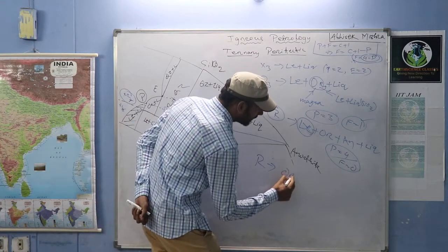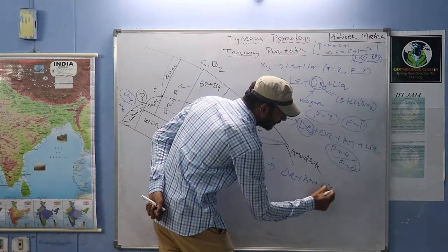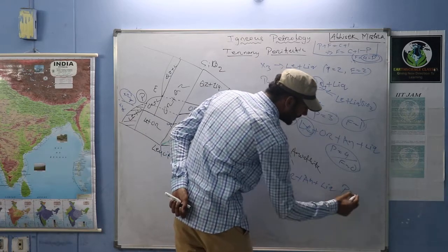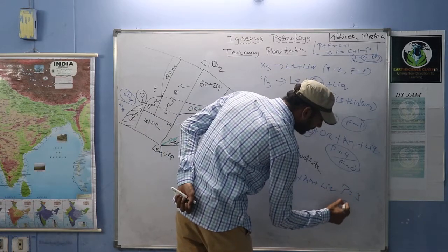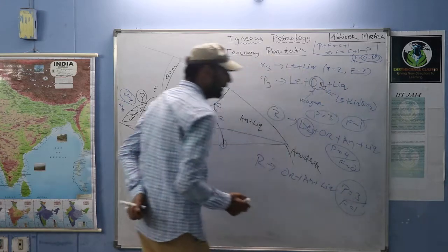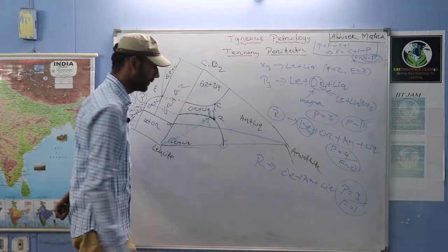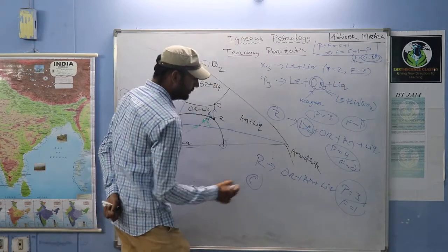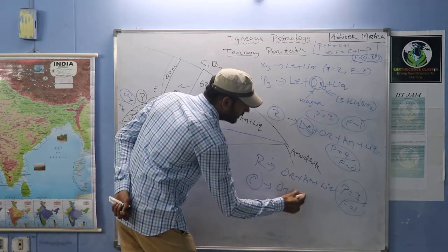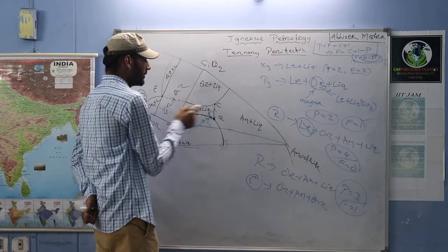At X4, also in the leucite field, we get leucite plus liquid. Number of phases two, degree of freedom two, so we join X4 with leucite. This touches the reaction curve at point P4. At P4: leucite plus orthoclase plus liquid. Orthoclase forms directly from magma and from leucite reacting with liquid SiO₂. From P4, number of phases becomes three, degree of freedom one — moving toward reaction point R.